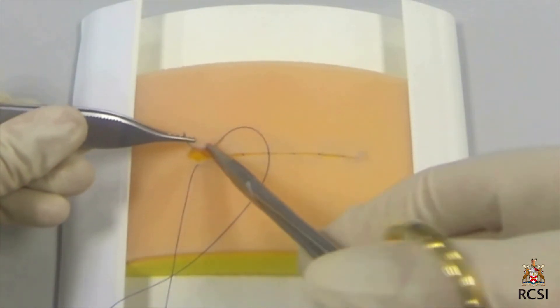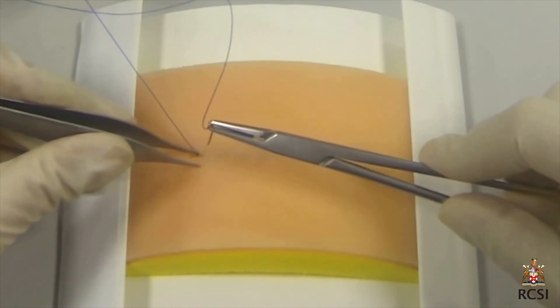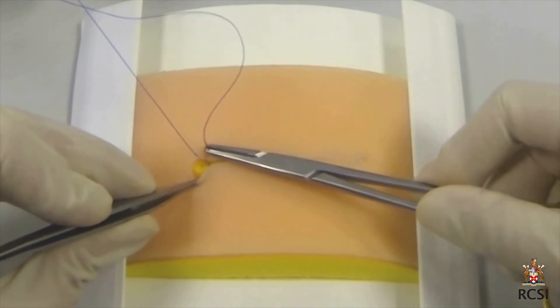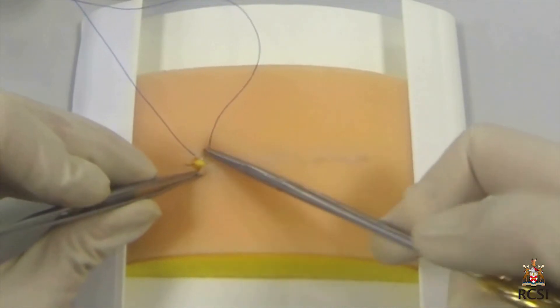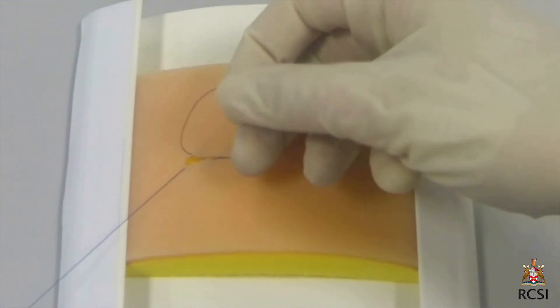Once the end of the wound is reached, tension is placed on the suture away from the wound to pull the skin edges together. On this occasion we are going to finish the suture with an Aberdeen knot. A deep bite is taken in the wound. When pulling the suture out of the wound it is not pulled out fully. A loop is then left at the end.